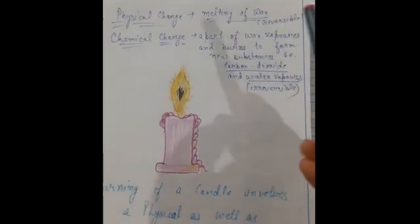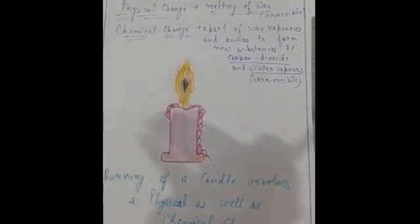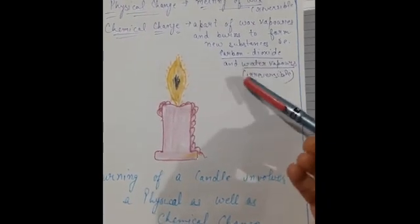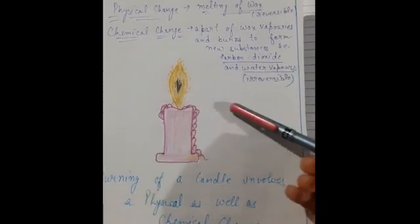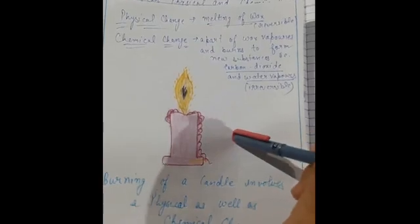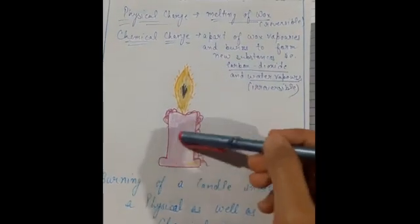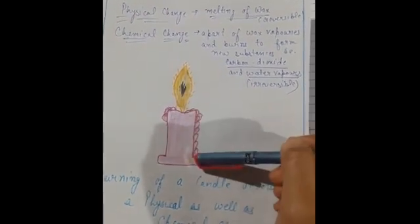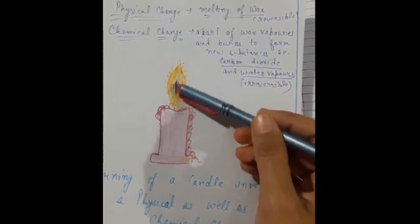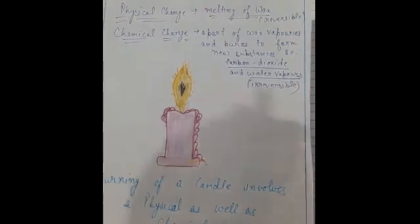Also, a part of the wax vaporizes and is used as fuel to burn the wick of the candle. The new substances formed are carbon dioxide and water vapors, which you cannot see as they mix into the air. So both changes occur simultaneously — physical change as the wax melts, and chemical change as part of the wax is used as fuel to produce light, heat, carbon dioxide, and water vapors.